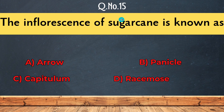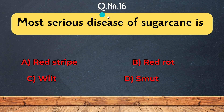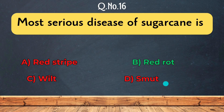Question 15: The inflorescence of sugarcane is known as — Arrow, Capitulum, Racemose, or Panicle. The correct answer is Arrow. Question 16: The most serious disease of sugarcane is — red stripe, red rot, wilt, or smut. The correct answer is Red Rot.